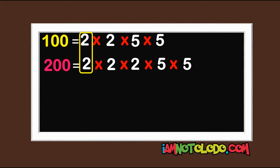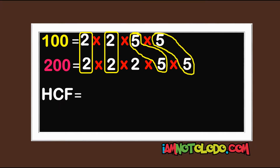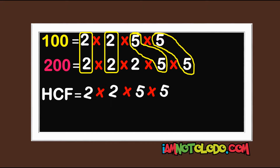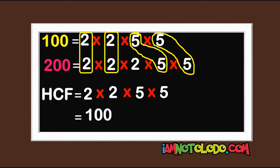2 is here, 2 is here — circle it. 5 is here, 5 is here — circle it. 5 is here, 5 is here — circle it. So let's pick one of each: 2 times 2 times 5 times 5. So when you multiply these we have 100. Did you get it right? Good.